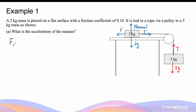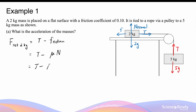Let's look at the net force acting on the 2kg mass. This is equal to its tension force minus the friction, and we know that the friction is given by the coefficient of friction multiplied by the normal force. In the free body diagram, the normal force acting on the 2kg mass should be balanced by its weight force, because the 2kg mass shouldn't be accelerating in the vertical direction as it is moving horizontally on the table. So the normal force equals the weight force of the 2kg mass, and this equation simplifies into tension minus the coefficient of friction multiplied by 2g.